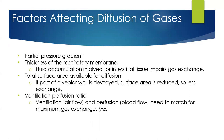Factors that affect the diffusion of gas include the partial pressure gradient, the thickness of the respiratory membrane, fluid accumulation in the alveoli, or interstitial tissue that damages gas exchange, and also the total surface area available for diffusion. If we have damage to the alveolar tissue, there may not be enough surface area for gas exchange to happen. Finally, there is the ventilation-perfusion ratio — ventilation versus blood flow. You need blood flow to the alveoli for gas exchange. If you have plenty of air but not enough blood, or plenty of blood but not enough oxygen, you have a mismatch and inadequate gas exchange.